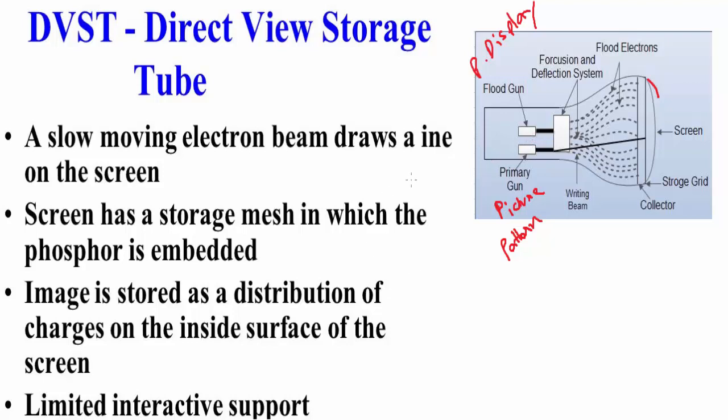There are some important points in DVST: a slow-moving electron beam draws a line on the screen, and the screen has a storage mesh in which the phosphorous is embedded.